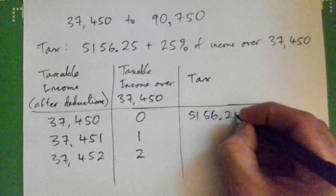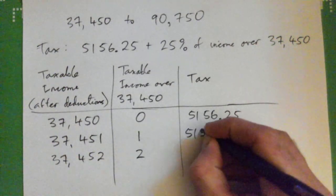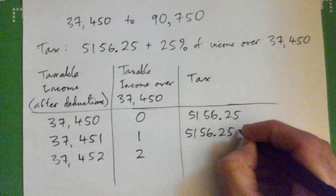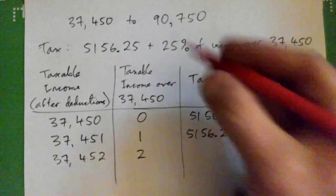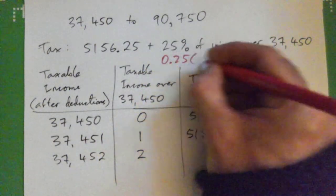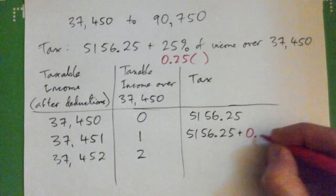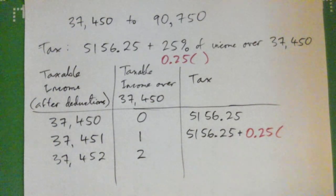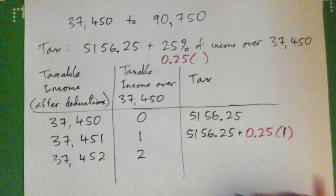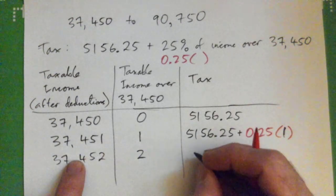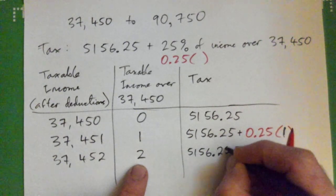If it's this amount, so you're exactly one dollar over, you pay $5,156.25 plus 25%, and 25% is 0.25, of means multiply, so 0.25 times that one dollar. That would be just an extra 25 cents basically.